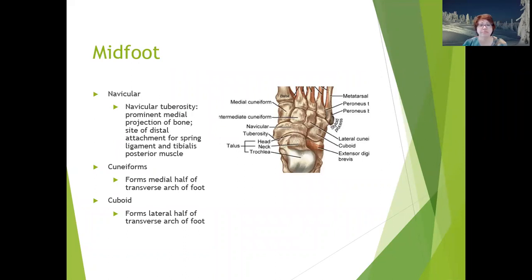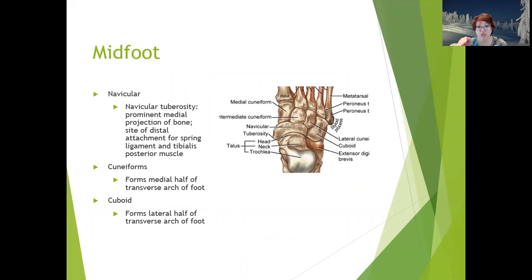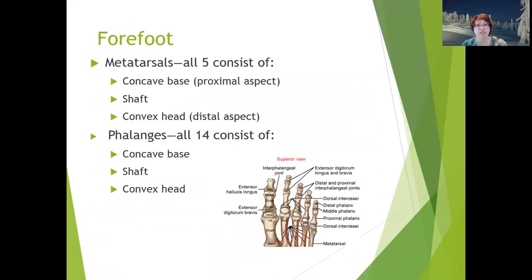The midfoot consists of the navicular, cuneiforms, and cuboid — all palpable. The navicular tuberosity is a prominent medial projection and is the site of the distal attachment for the spring ligament and the tibialis posterior muscle. The cuneiforms form the medial half of the transverse arch of the foot, while the cuboid forms the lateral half, so the shape of these bones is important to the arch structure.